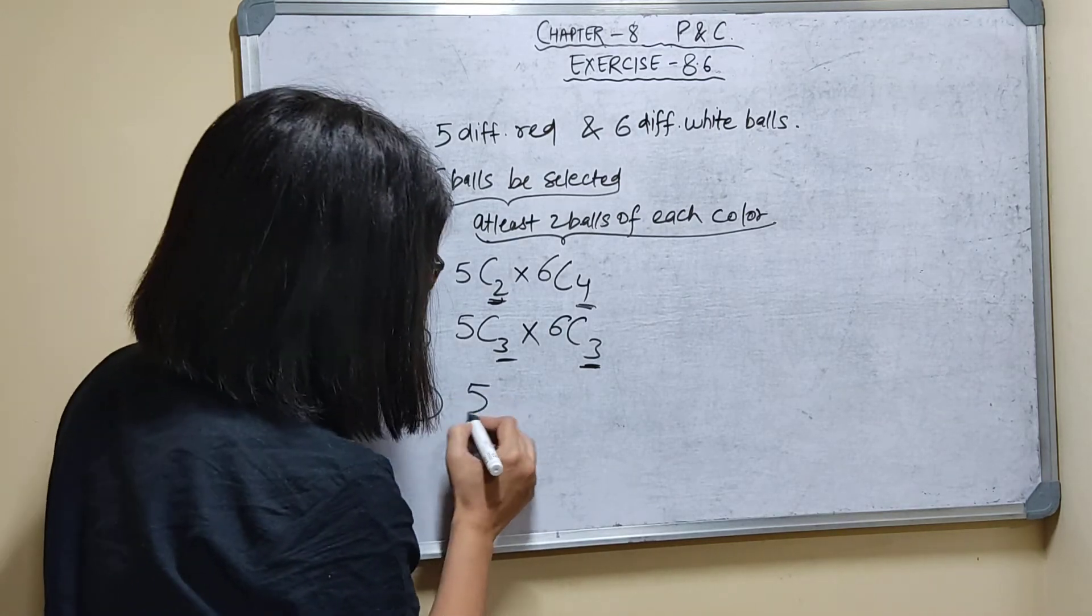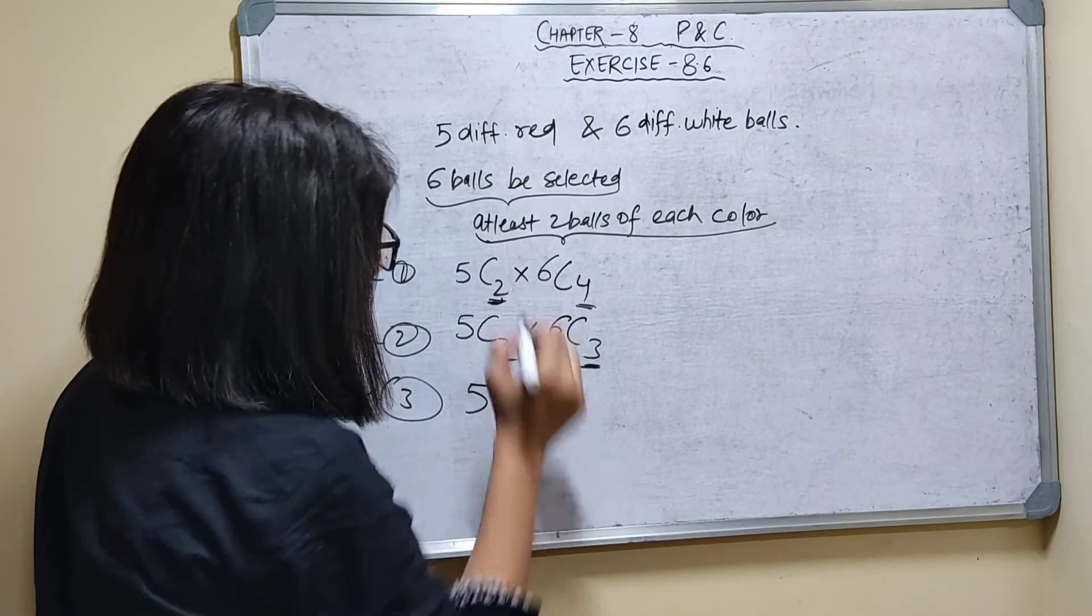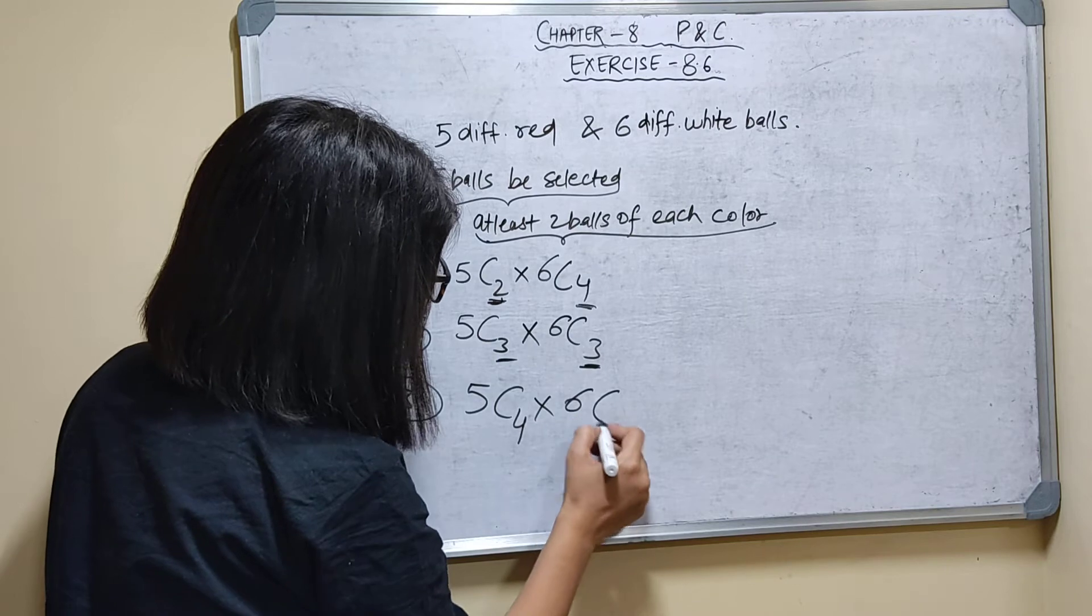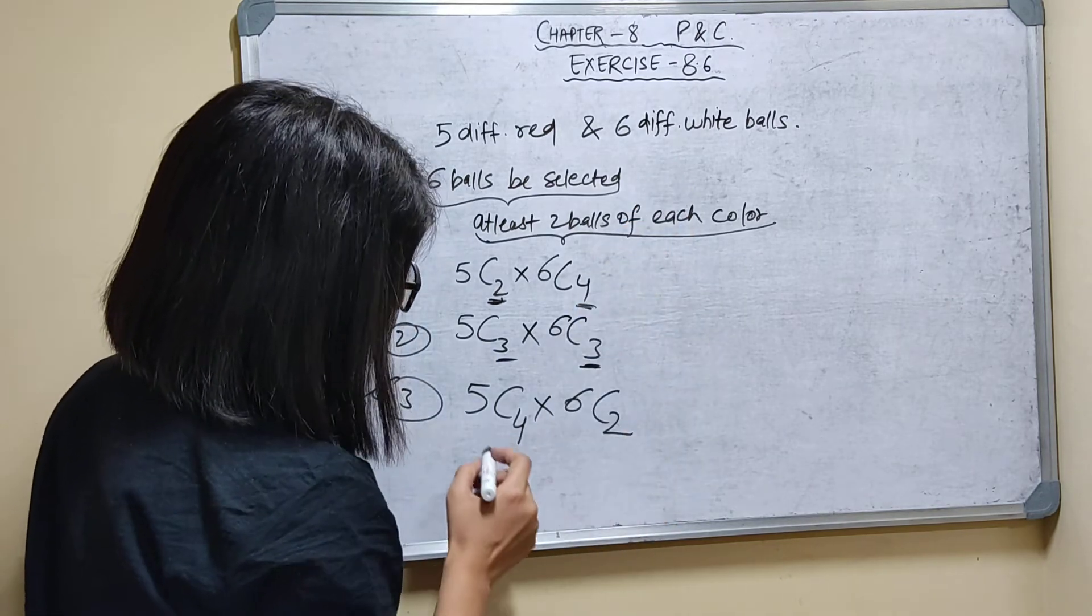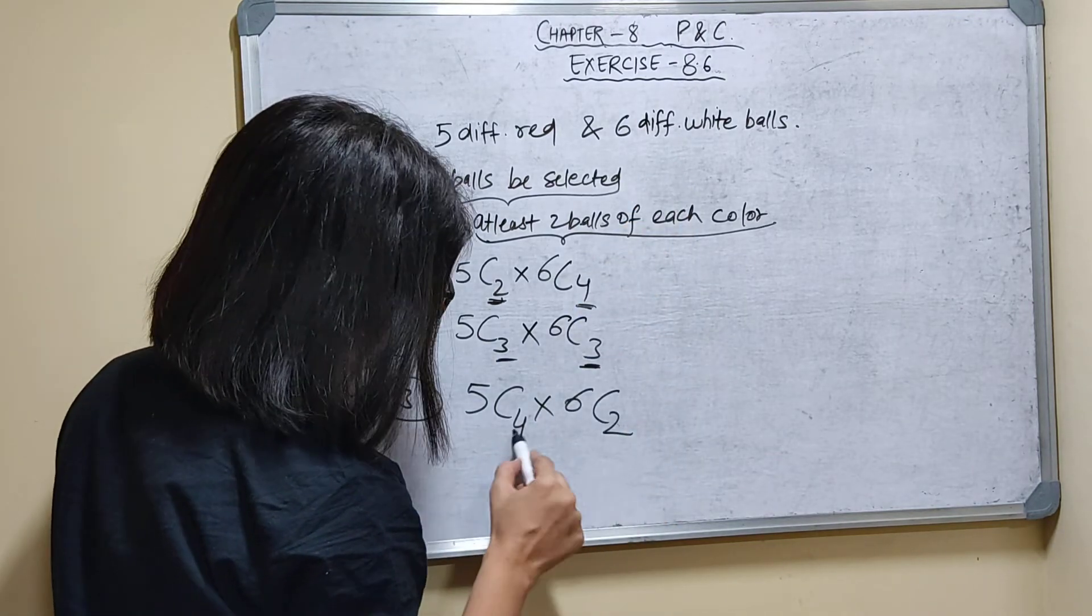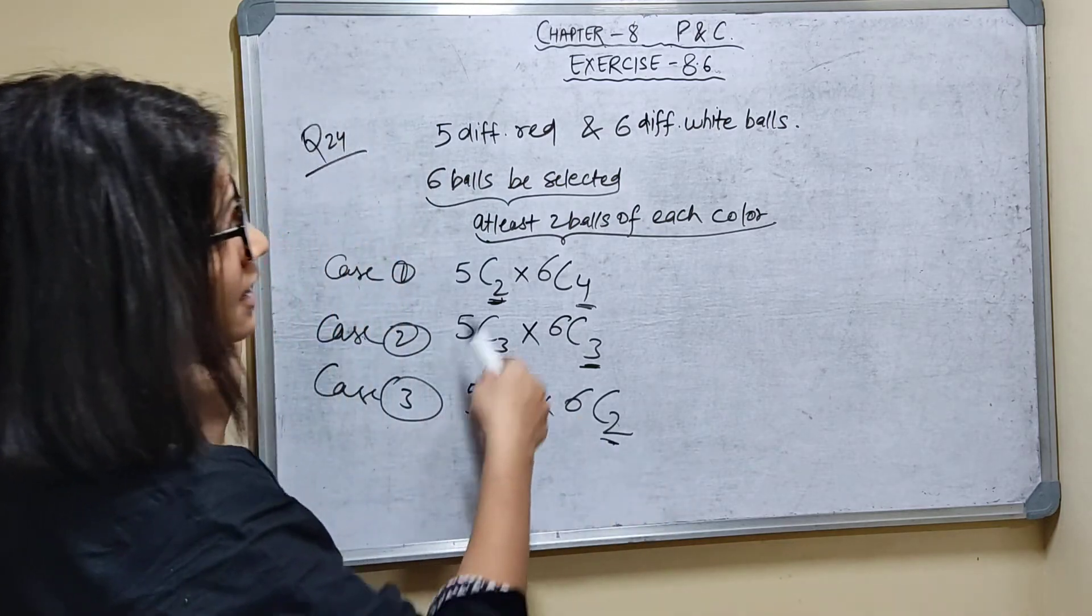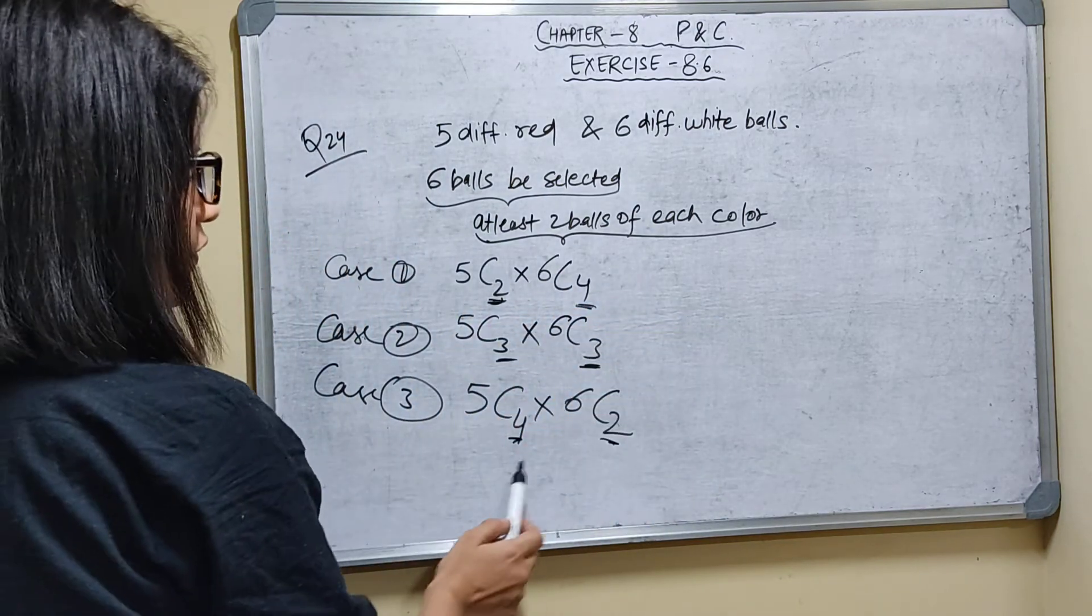Case 3: If I take 4 balls from red, then I can take 2 balls from white. 5C4 × 6C2. This also satisfies the condition that there are at least 2 balls of each color.